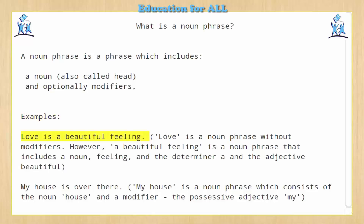Love is a beautiful feeling. 'Love' is a noun phrase without modifiers. However, 'a beautiful feeling' is a noun phrase that includes a noun — feeling — and the determiner 'a' and the adjective 'beautiful'.